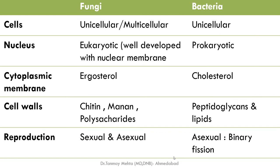So let us recap the differences. Fungi can be unicellular or multicellular; bacteria can only be unicellular. The nucleus is eukaryotic in fungus while it is prokaryotic in bacteria. The cytoplasmic membrane contains argosterol in fungus while it is made up of cholesterol in bacteria. The cell wall contains chitin, manan, and other polysaccharides in fungus, while it is made up of mainly peptidoglycan and lipids in bacteria. The reproduction method can be sexual as well as asexual in fungi, while bacteria multiply by asexual fission.